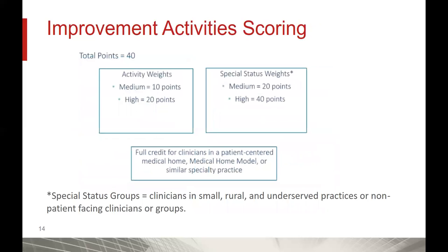There are a total of 40 possible points in this performance category. For most practitioners, medium-weighted activities are worth 10 points and high-weighted are worth 20. However, if you qualify as a special status group, the weighting is doubled — medium-weighted activities are worth 20 points and high-weighted activities are worth 40. These special status groups include clinicians in small group practices (15 or fewer eligible clinicians), rural practices, clinicians in underserved practices, and non-patient-facing clinicians or groups. Additionally, full credit is given to clinicians in a patient-centered medical home, medical home model, or similar specialty practice.